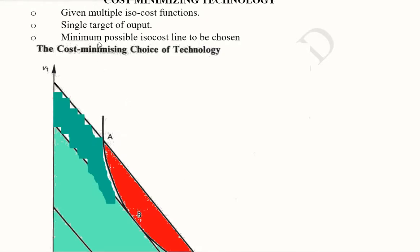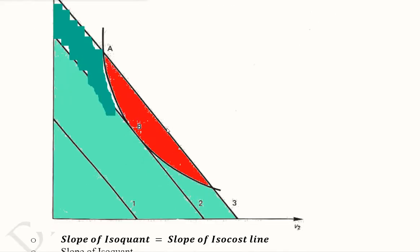We want to choose the minimum possible isocost line so that we are able to minimize the cost. Here this is the point of equilibrium because the tangency happens here. We are able to achieve this level of output by using the second isocost curve.